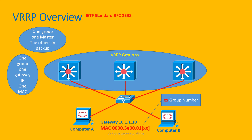In one group, there will be only one master and all the other layer 3 switches or routers will be in the backup state. In our example, this layer 3 switch is the master serving clients, and these two layer 3 switches are in backup state, monitoring the master. If the master fails, they will take over to serve the clients. You can configure 256 groups with group numbers from 0 to 255.